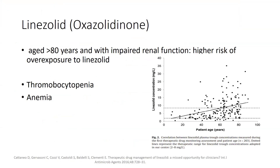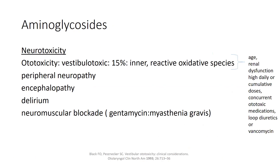Regarding linezolid — one study showed that linezolid concentrations can be three times higher in patients aged above 80 compared to those under 40, and this is further affected by renal dysfunction. The most common side effects in elderly patients are blood dyscrasias, mainly thrombocytopenia and anemia, depending on baseline platelet count and duration of therapy. The vestibular toxic side effects of aminoglycosides can be particularly devastating in elderly patients, and age is an important risk factor. Notably, gentamicin is a potent neuromuscular blocking agent, which can be a particular problem in patients with myasthenia gravis.